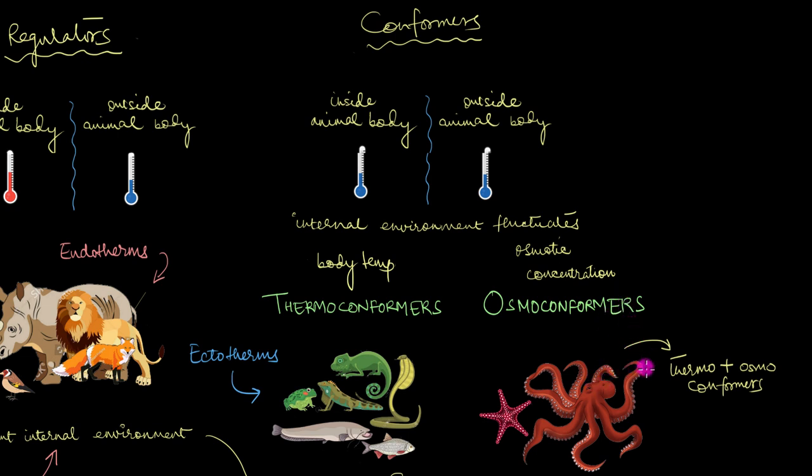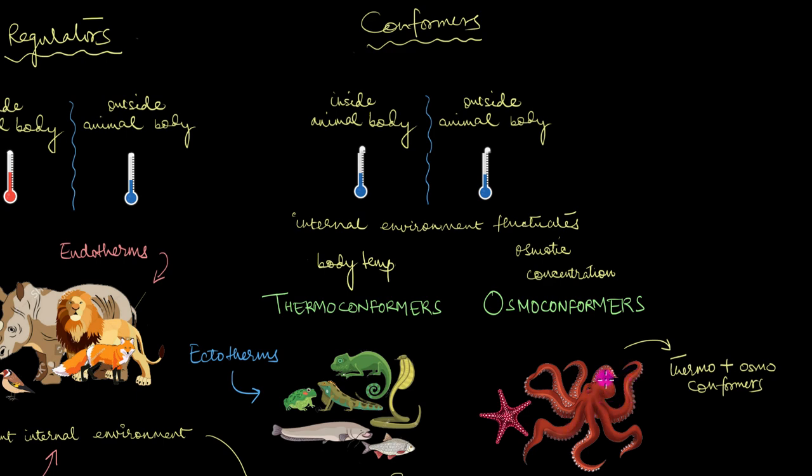Most marine invertebrates are both thermo as well as osmoconformers, like the octopus, the starfish, and lobsters. That means that these animals, they can match their internal body temperature as well as their osmotic concentration to their surroundings, which is the sea, which is present outside.